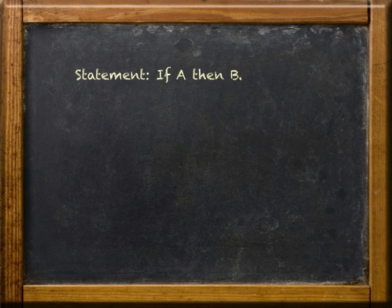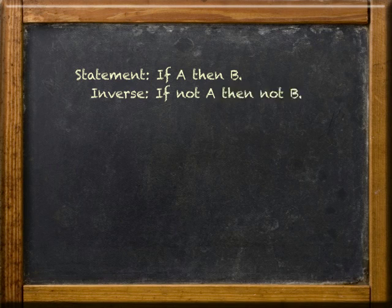So here we go with the two new statements. First, we have what's called the inverse. The inverse would be: if not A, then not B. Notice that the hypothesis and conclusion stay in the same place, but they both get negated.